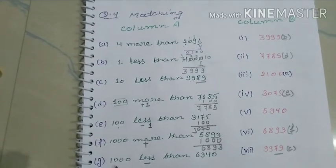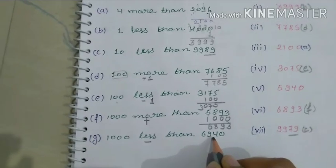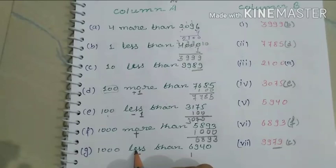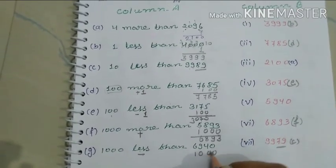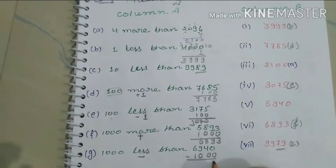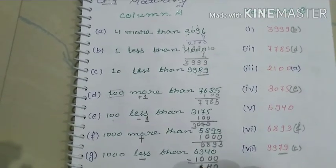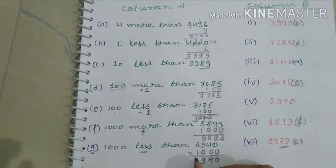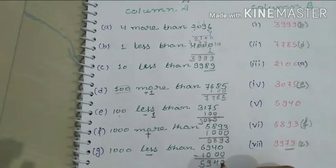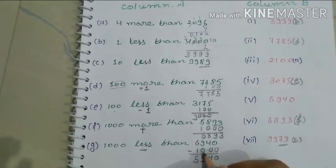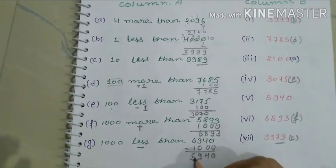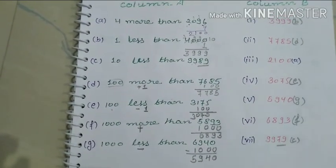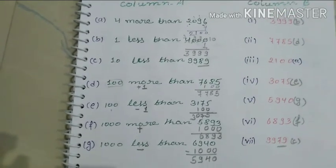Next: 1000 less than 6940. When we subtract, we subtract only the thousands digit: 6 minus 1 equals 5. The hundreds, tens, and ones remain 940. So 6940 minus 1000 equals 5940. Exercise 1.4 is now completed.